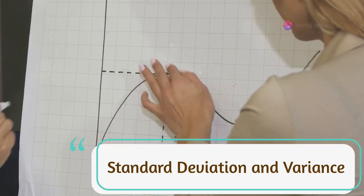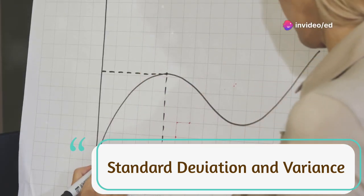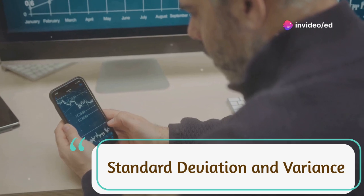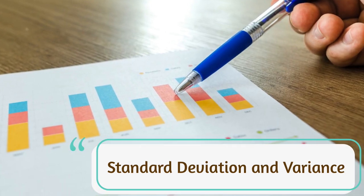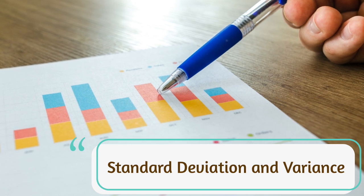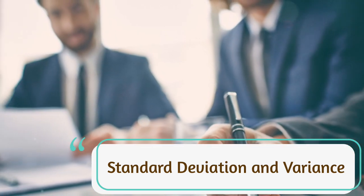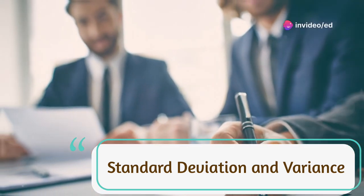Building on variance, the standard deviation is the square root of the variance, offering a measure of spread in the same units as the data. For the same dataset, the standard deviation would be approximately 2.83, giving a more intuitive understanding of data dispersion.